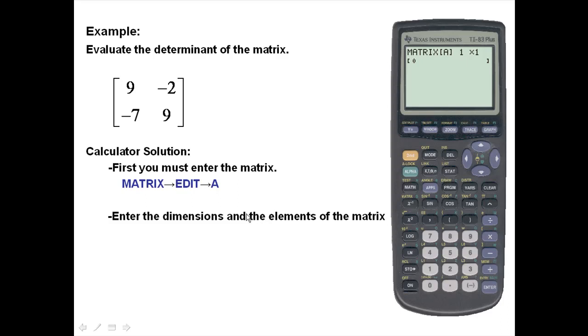Next, we want to enter the dimensions and the elements of our matrix. This is a 2 row by 2 column matrix. I'm pressing 2 after every entry. And now, enter my elements.